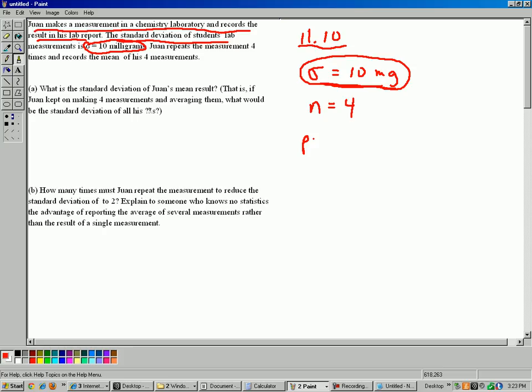Now what's our population? Our population is all measurements in the world, maybe, or all possible measurements that Juan could possibly take in this laboratory. So there could be thousands and thousands of potential different measurements he could take. So he's only taking four. Okay, let's answer the question.